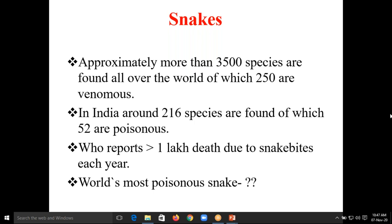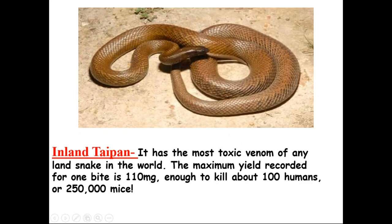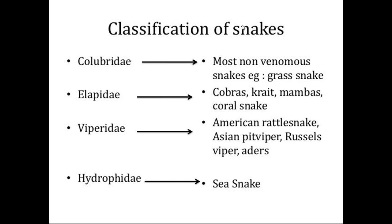Most of you wrote viper — but that is not the answer. The most toxic snake is called the Inland Taipan. It is the most toxic venom of any land snake in the world. The maximum yield recorded for one bite is 110 mg of venom, which is enough to kill about 100 humans or approximately 250,000 mice. This is the world's most poisonous snake.